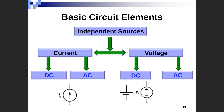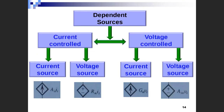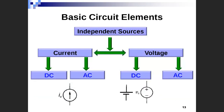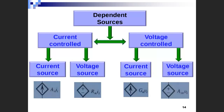So I have two main types of sources: independent sources and dependent sources. Independent sources have an explicit or specific value of current or voltage. But the dependent source has a value multiplied by another variable, which may be V, I, or any other variable. The symbol for the independent source is a circle. The symbol for the dependent source is a diamond.